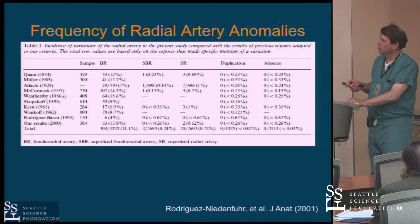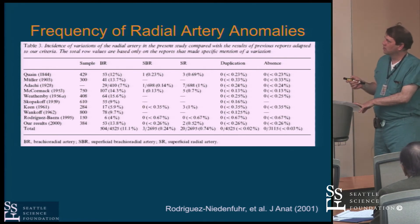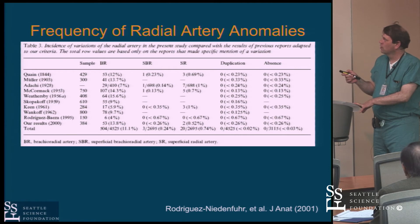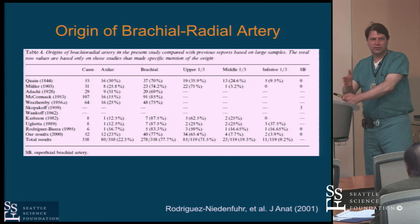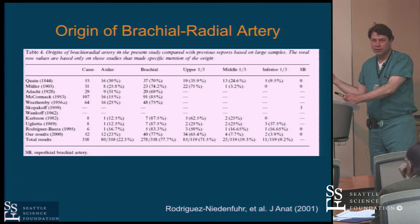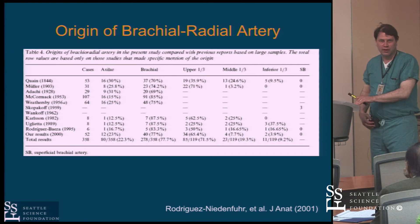There are multiple studies describing these anatomic variations. The most recent was done largely because surgeons were interested in using the radial for bypass surgery. Many studies date back to the 19th and early 20th century describing variations of the brachial and radial artery, the superficial brachial, superficial radial, and duplications. In general, they found that about 11% of the time there will be an accessory or secondary brachial-radial artery. So in roughly one in ten cases you'll see one of these variations — though many times you may not even know it if the catheter just passes through.